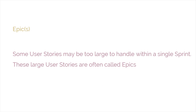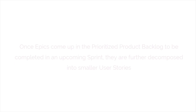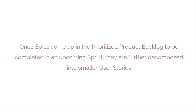Some user stories may be too large to handle within a single sprint. These large user stories are often called epics. Once epics come up in the prioritized product backlog to be completed in an upcoming sprint, they are further decomposed into smaller user stories.